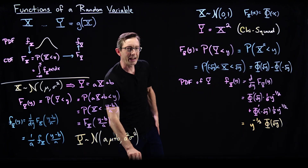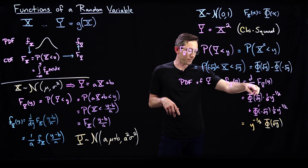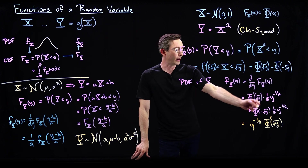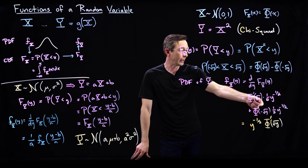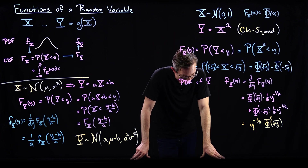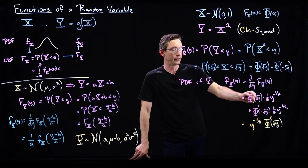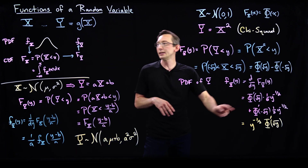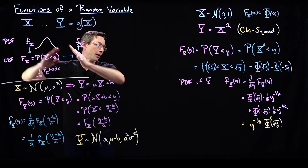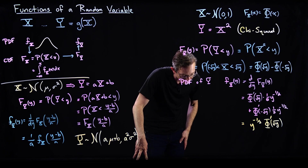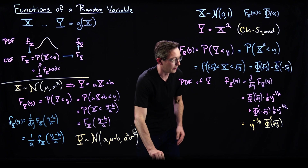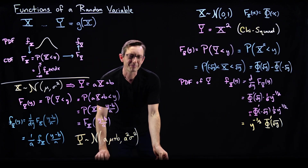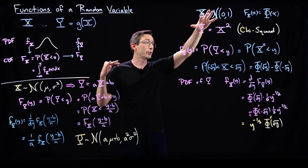I think it's because I'm taking the derivative of these things, and the slope at plus and minus root y are equal and opposite — so it seems like I probably just missed a sign somewhere, and this should be a minus here. Then this all works out. The details are important, but that's not the main point — the main point is for you to see the procedure.